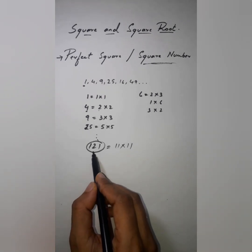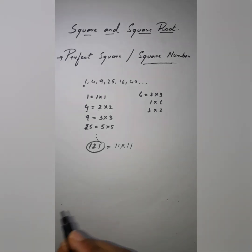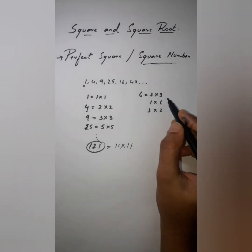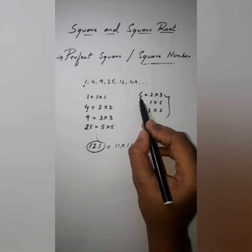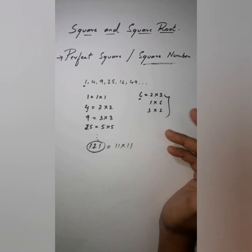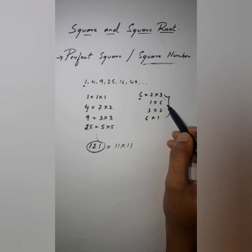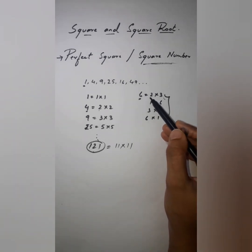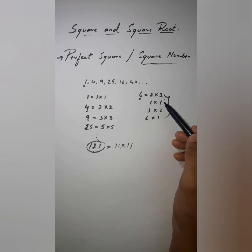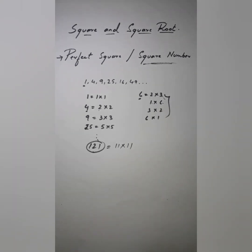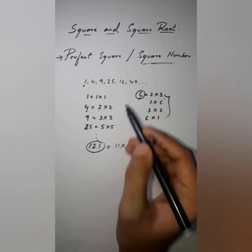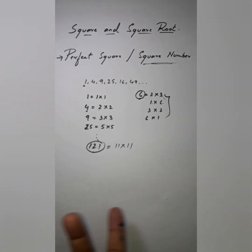Now, can we say all numbers are perfect square numbers? No, that is not possible. Take 6 — it is a product of 2×3, or 1×6, or 3×2, or 6×1. In none of these cases are we multiplying a number with itself, so we cannot say 6 is a perfect square number.